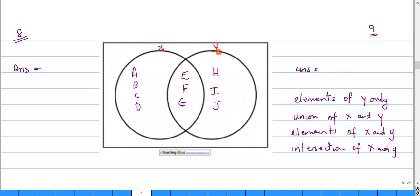says how many elements are there in sets x and y? Simply count them off: one, two, three, four, five, six, seven, eight, nine, and ten. So for number eight our answer would be ten.